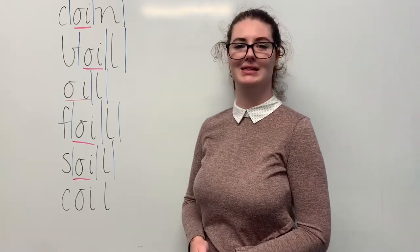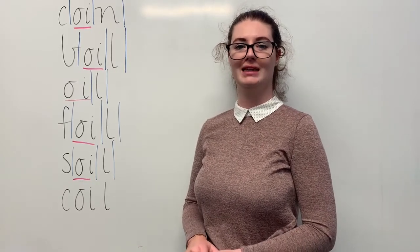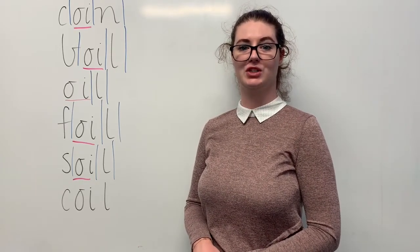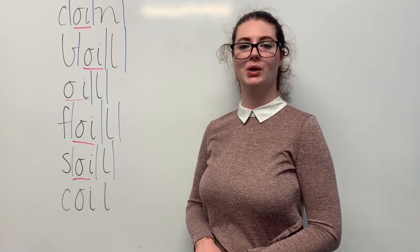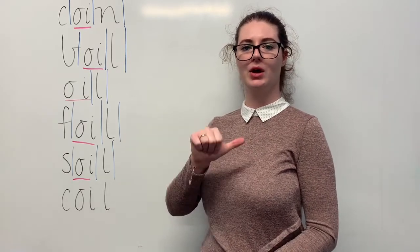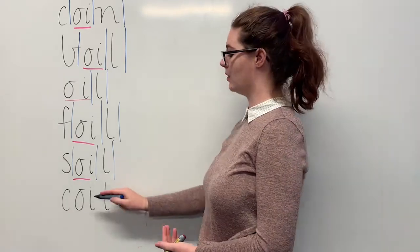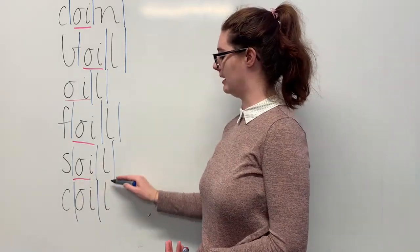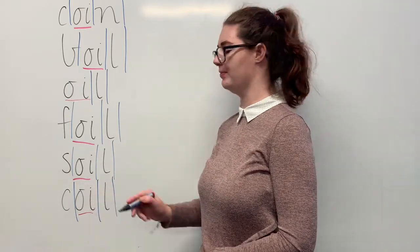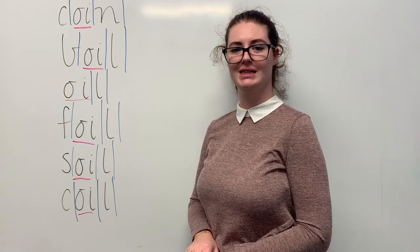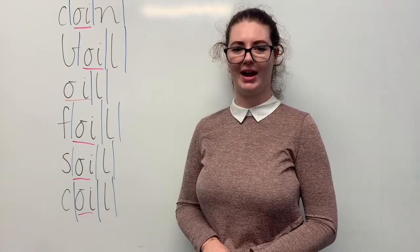And our last word is coil. Say coil. When the ferry left the jetty, the deckhand needed to coil up the rope to store it safely. The sounds in coil are, together, k, oi, l. The letters in coil are c, o, i, l. The part we need to remember is the oi digraph making the oi sound. Can you teach it to me? Coil: c, o, i, l.